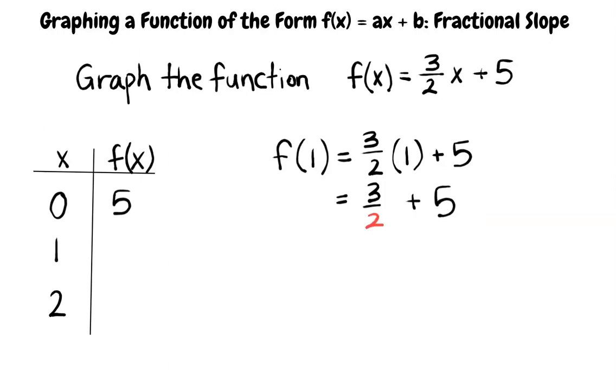The fraction 3 over 2 has a denominator of 2. We need to transform 5 into a fraction that has a denominator of 2. We can do this by multiplying 5 by 2 over 2. This is valid because 2 over 2 is equal to 1, and a number multiplied by 1 maintains its value. We can rewrite 5 as 5 over 1 because a number divided by 1 is equal to that same number. To find what 5 over 1 times 2 over 2 equals, we must first multiply across the numerator, and then multiply across the denominator.